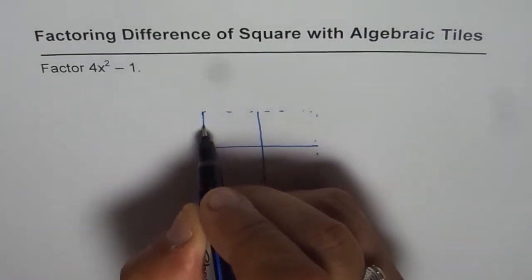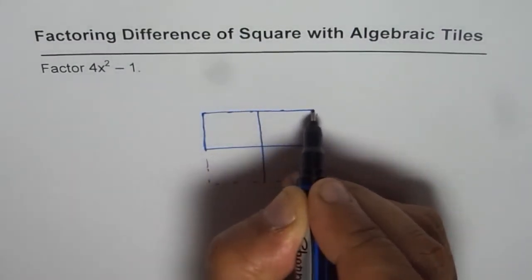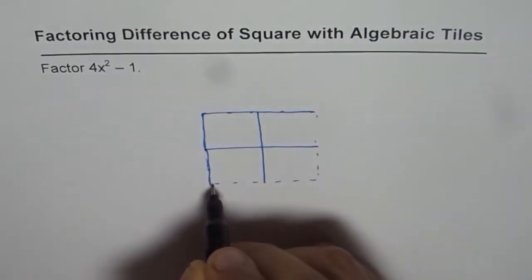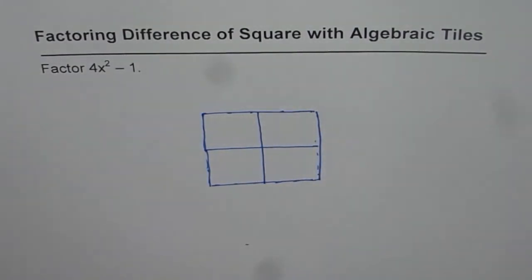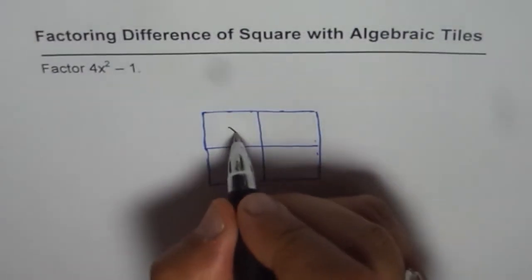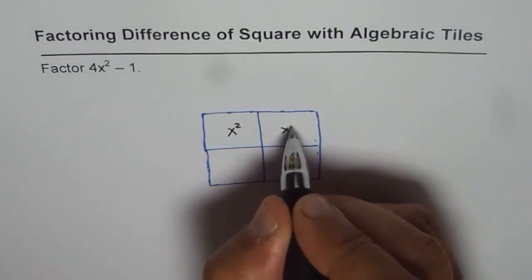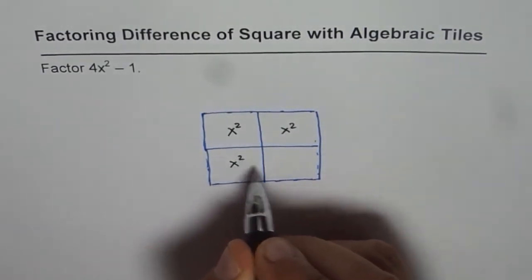I am using blue color for positive. So this is positive x², four of them. That represents 4x². Each is a square tile, an x² tile.